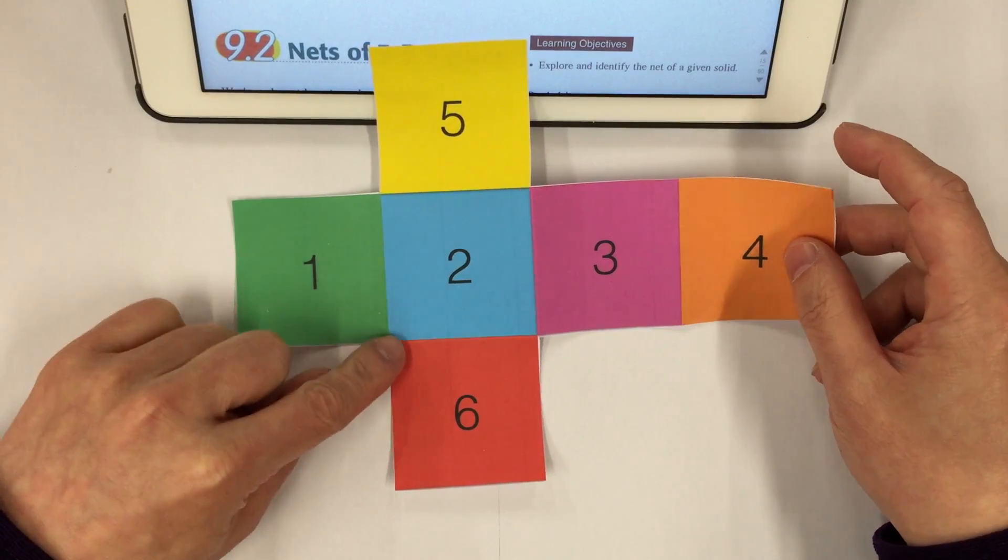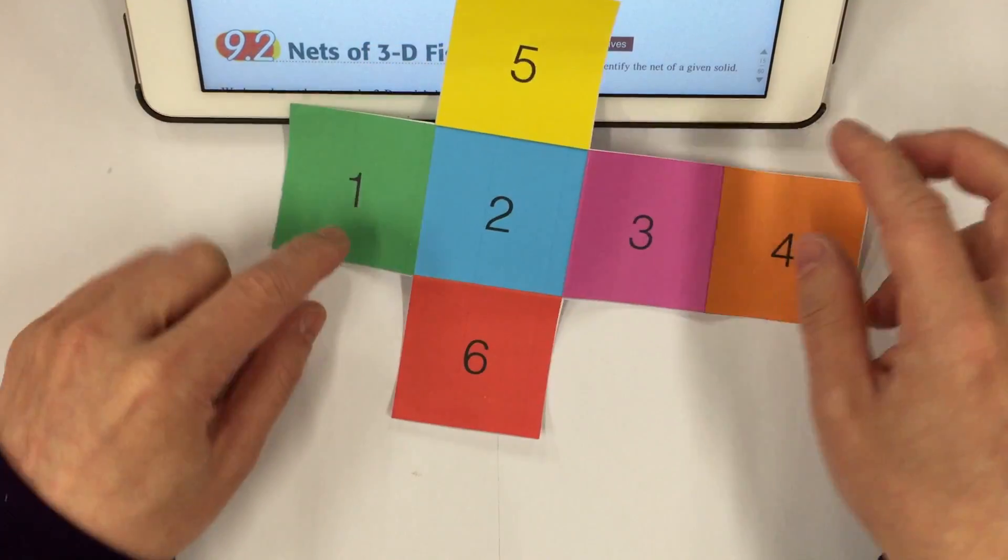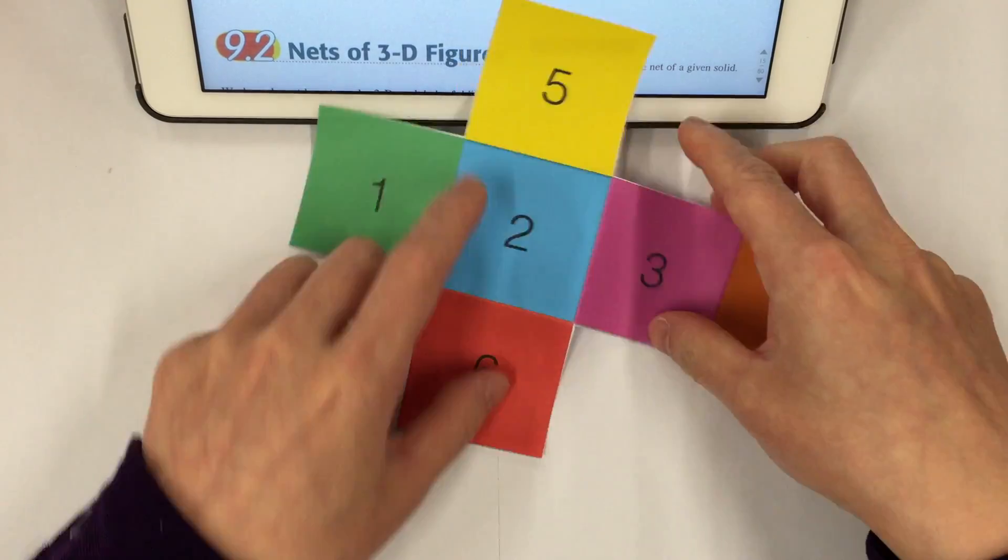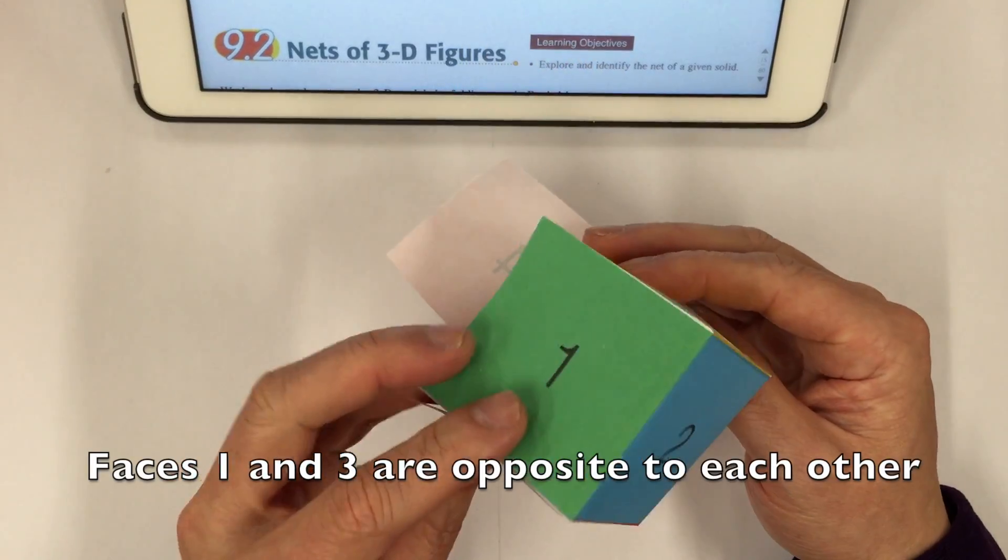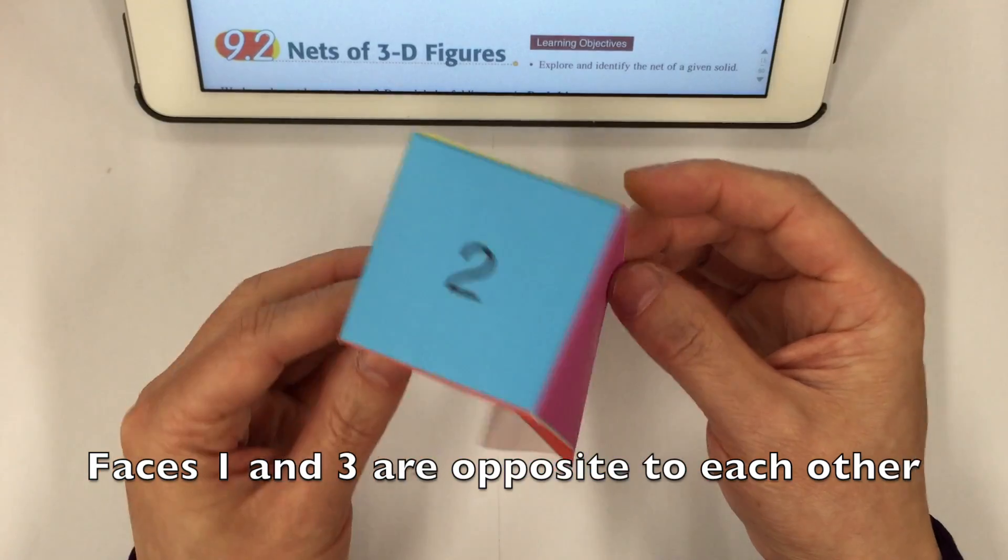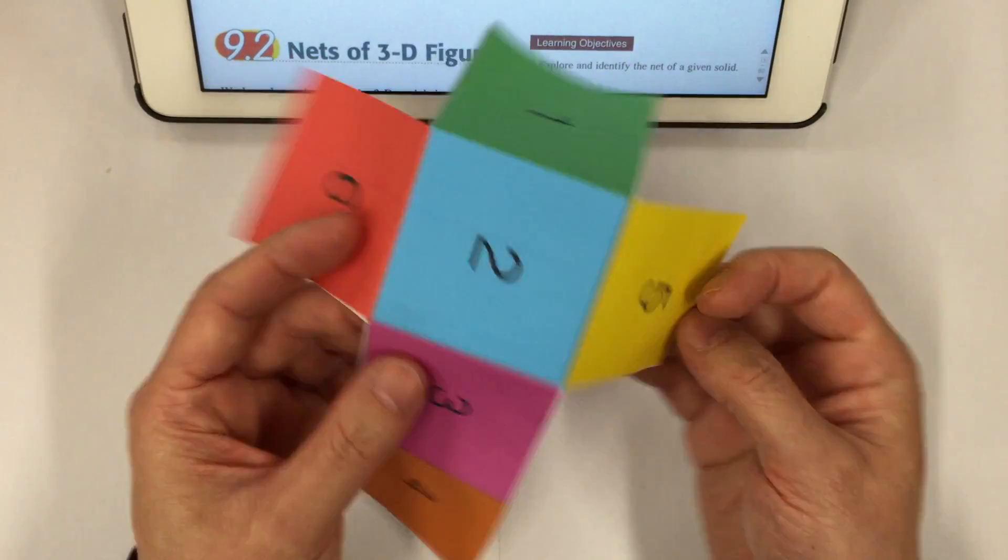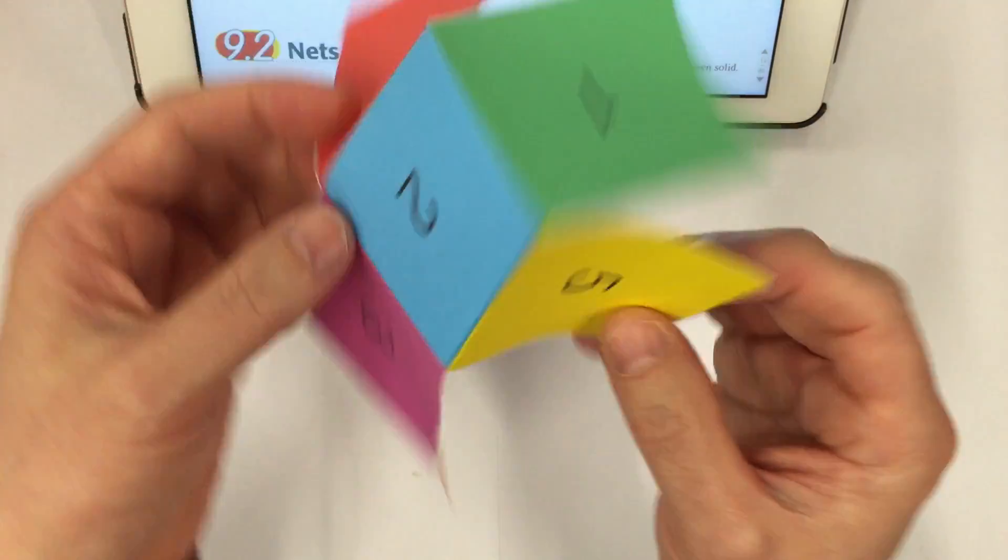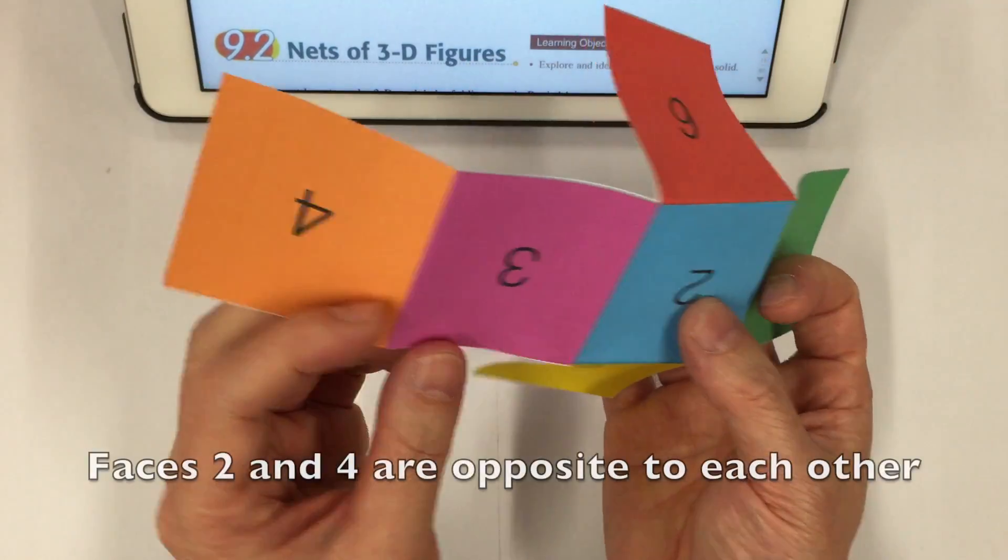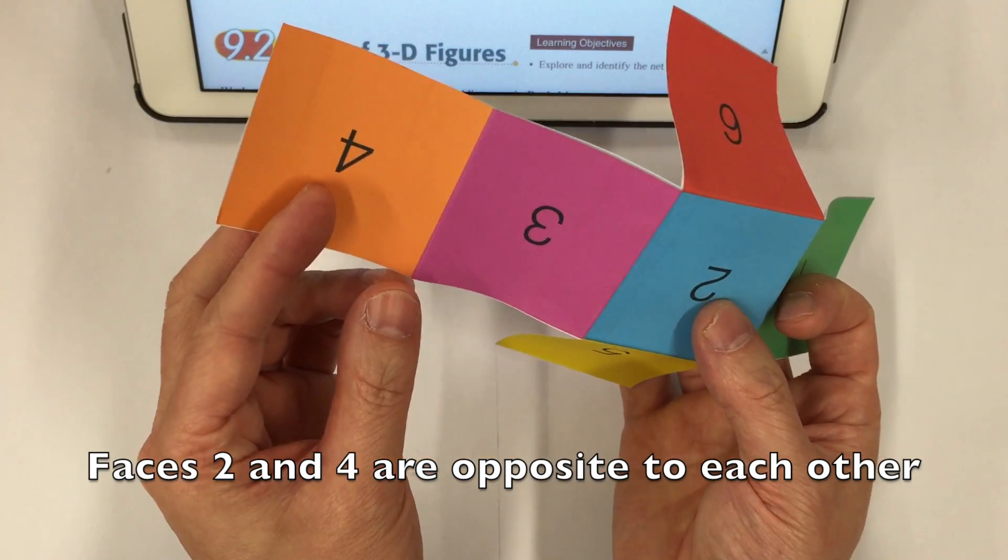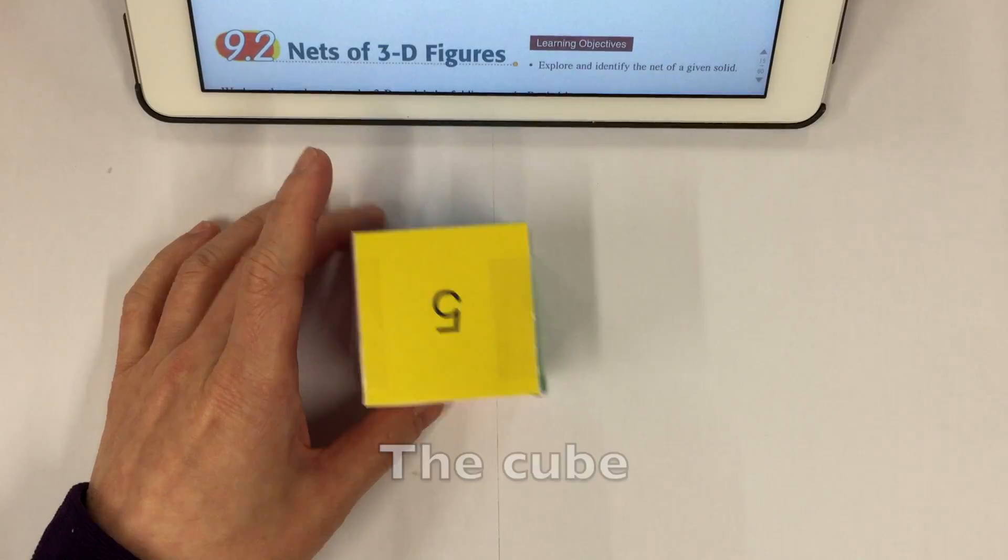Let's say this is face number one and face number three. If I fold it like this, face one and face three will be opposite to each other. And again, five and six will be opposite to each other. And finally, face number two and number four will be opposite to each other.